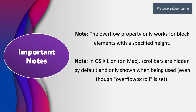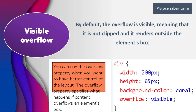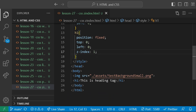An important note is that the overflow property only works for block elements with a specific height. If you don't know what block elements are, you can switch to our previous videos where we discussed them. Another note is that on Mac operating systems, scroll bars are hidden by default and only shown when being used, even if overflow scroll is set. The first value is visible, which is the default.